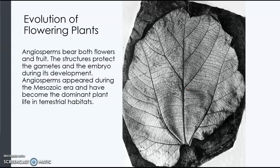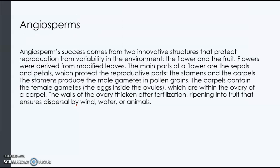Then we have flowering plants called angiosperms, and they are today the dominant plant. The flowering plants produce a flower and a fruit. The fruit is actually the ripened ovary of the plant.